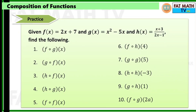Time to practice! Given f(x) = 2x + 7, g(x) = x² − 5x, and h(x) = (x + 3)/(2x − 1), find: (1) f∘g(x), (2) g∘f(x), (3) h∘f(x), (4) h∘g(x), (5) f∘f(x), (6) f∘h(4), (7) g∘g(9), (8) h∘h(−3), (9) g∘h(1), and (10) f∘g(2a). Pause the video and try these yourself!